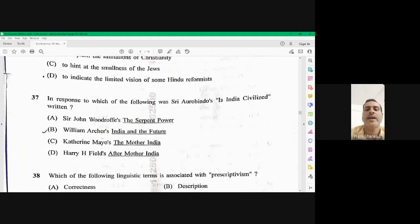Question number 37, in response to which of the following was the Aurobindo's, Is India civilized written? It was written in response to Sir William Archer's, India and the future. William Archer ki bhakti, India and the future.